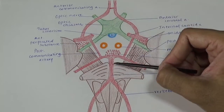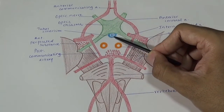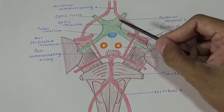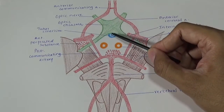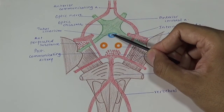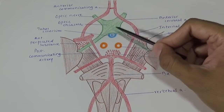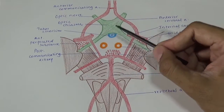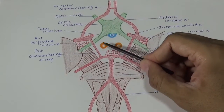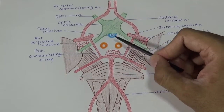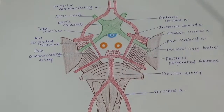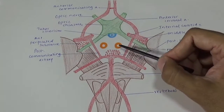From front to back: this is the tuber cinereum and infundibulum, part and parcel of the hypothalamus. The infundibulum, when it passes through the diaphragma sellae, continues with the neurohypophysis. Posteriorly, you can see two small sessile nodular structures — these are the mammillary bodies, again part and parcel of the hypothalamus.